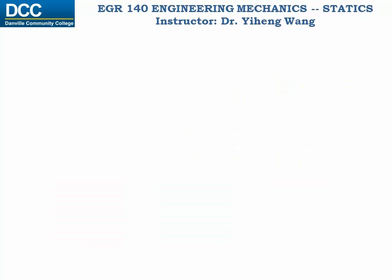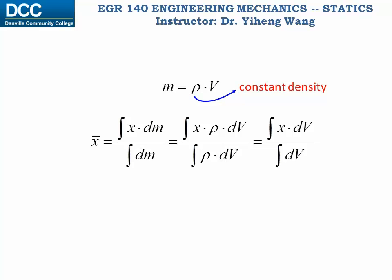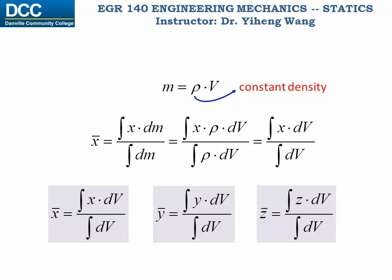We also know that mass equals density rho times the volume. And if the rigid body has uniform density, then density rho can also be cancelled out from the numerator and denominator of the equation. Now this new set of formulas represent the coordinates of the centroid of volume for this rigid body. Note that centroid means a geometric center. And in this case, the center of gravity, the center of mass, and the centroid of the volume are all the same point.